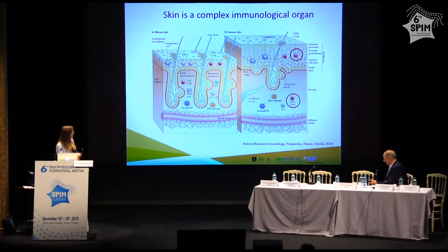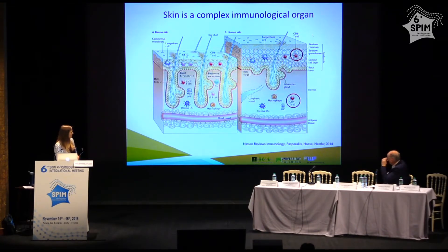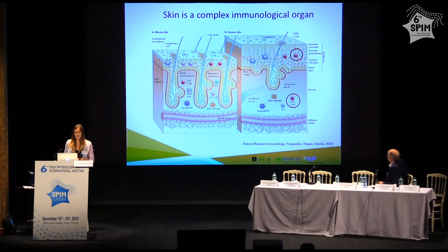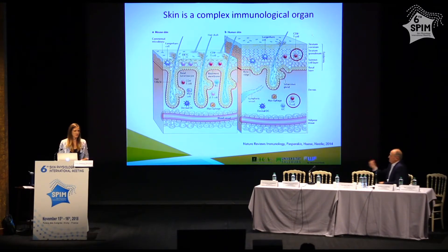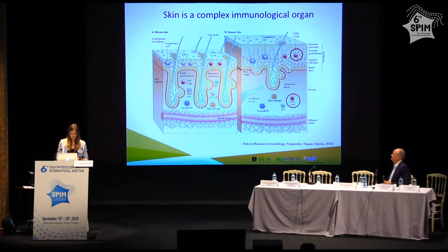When you look at mouse skin and human skin, you can see that they differ in their structure and also in cellular composition. Direct translation of findings from the mouse system to the human system is sometimes difficult. Therefore, there is a need to develop an in vivo mouse model that would allow studying this tissue immune system in vivo.